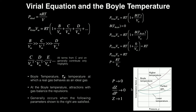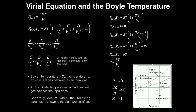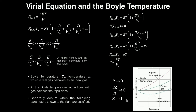It turns out that the Boyle temperature is typically reached under three conditions. First, the pressure ought to be very low, approaching zero, so we should be on the left side of the horizontal axis. And if you take the derivative of the compression factor with respect to pressure, it should approach zero — meaning the slope of the tangent line of the curve should be as flat as possible.